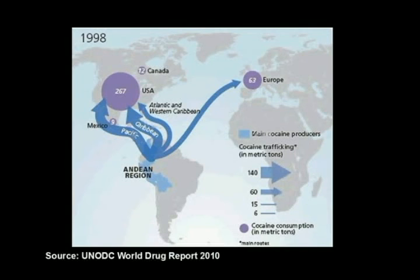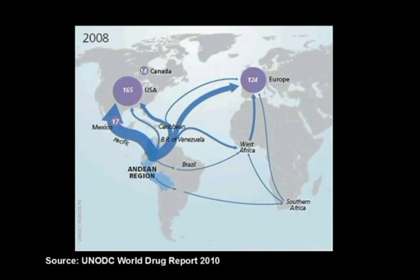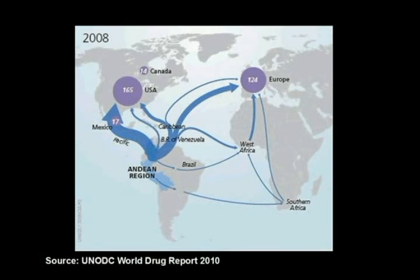This is the same map for 2008. The sea routes were replaced by land routes through Mexico. The increased cocaine trade through the country fueled an increase in violence. In 1998, Europe was consuming 63 tons of cocaine. By 2008, this number increased to 124 tons — a two-fold increase. New routes were opened. Africa, which up to that point had nothing to do with the cocaine trade, became an important route to Europe. Pressure on the sea routes going to the United States made drug dealers find new routes and new customers.